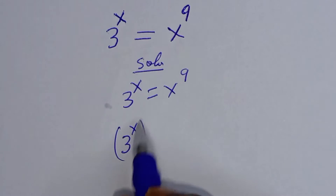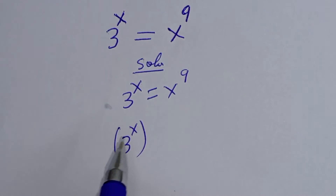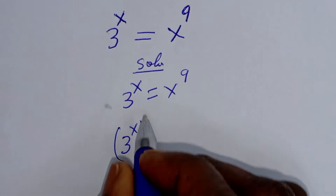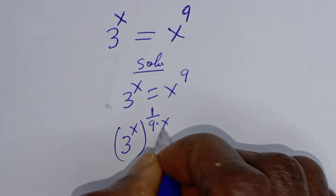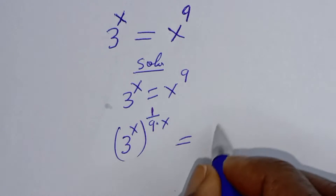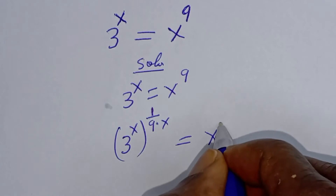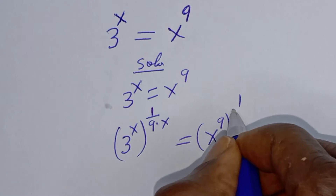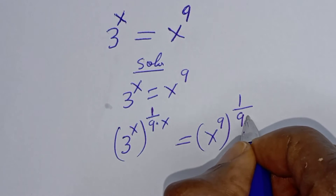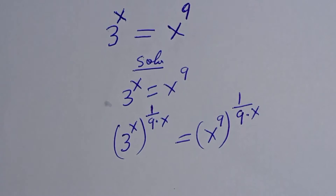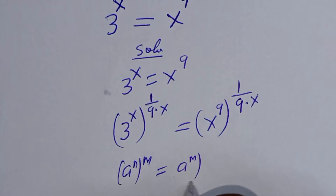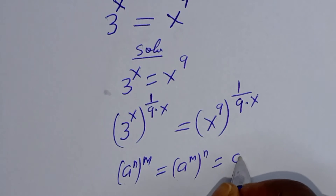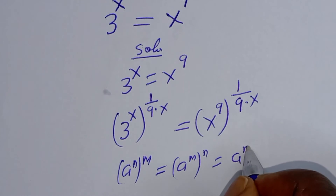For t raised to power s, let's multiply the exponent of both sides by 1 over 9x. Then t to the power of 1 over 9 multiplied by s is equal to s raised to power 9 to the power of 1 over 9 multiplied by x. Now, if you have a raised to power n to the power of m, this is equal to a raised to power m to the power of n, which equals a raised to power n times m.